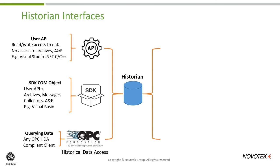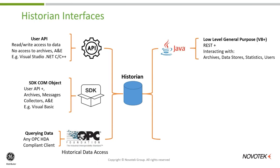Now let's turn to some of the newer interfaces. For those with historian version 8 or newer, we have a Java SDK kit. It offers an extensive range of features — fairly low-level access — but we can interact with tags, archives, data stores, statistics, and users. In many cases, this supersedes the functionality available in both the User APIs and the SDK COM objects.